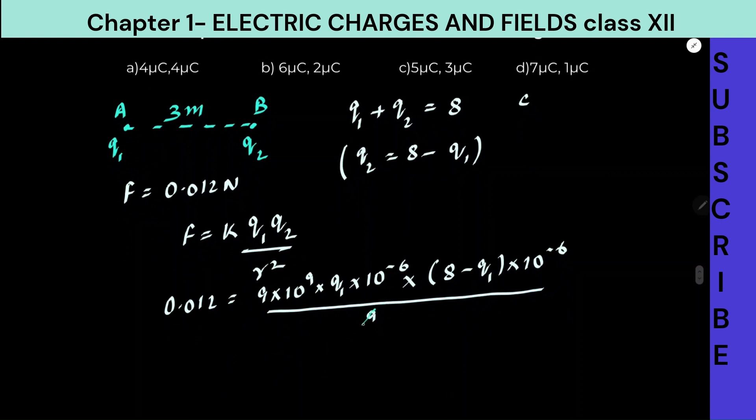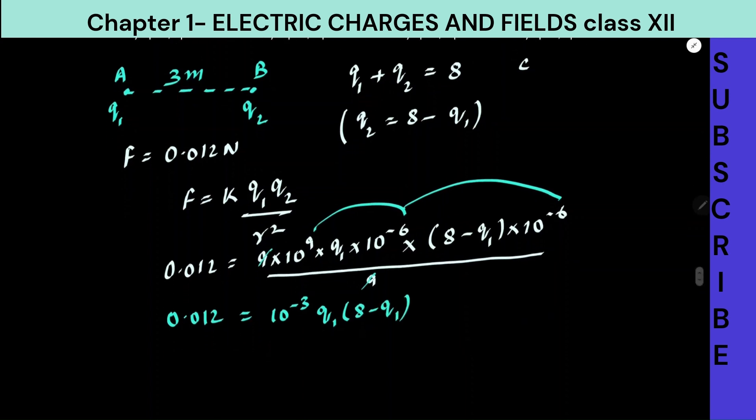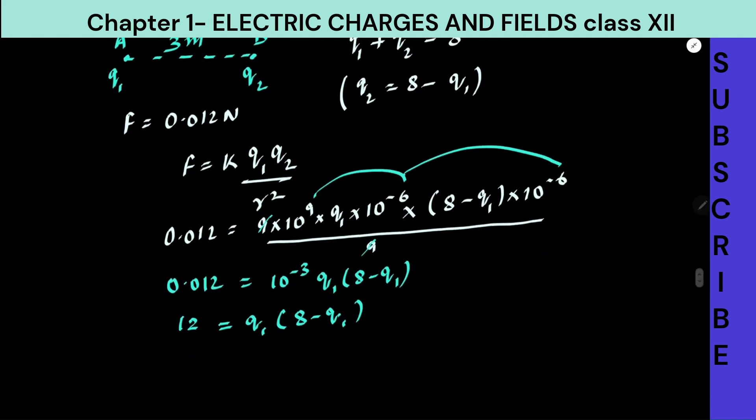Let us simplify it further. 9 cancels out with this 9 and this will become 0.012 equals to 10 to the power 9 minus 6 or 9 minus directly minus 12, 10 to the power minus 3, Q1 into 8 minus Q1. Now let us take 10 to the power that side. It will become 12 which is equals to Q1 into 8 minus Q1.